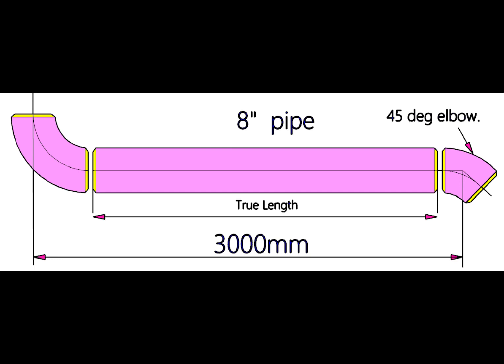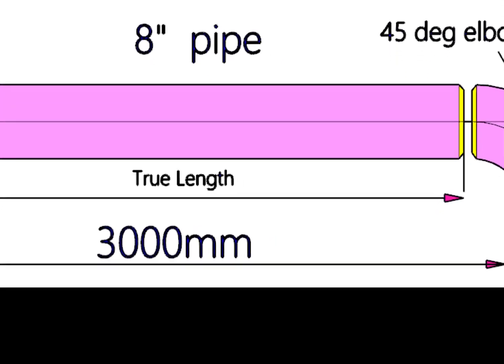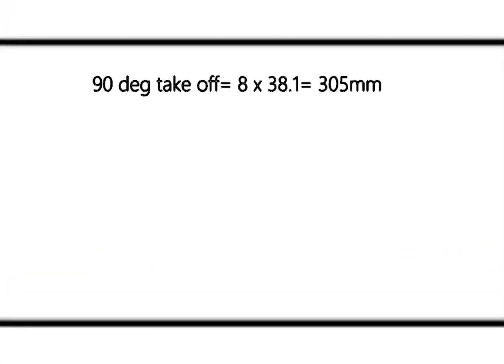To calculate the take-off of 45 degree elbow, multiply the diameter in inches with 0.4142. Let us calculate.